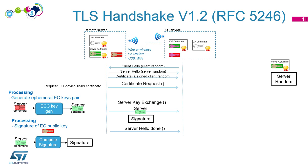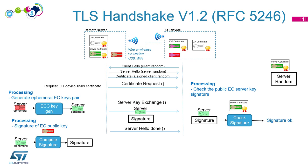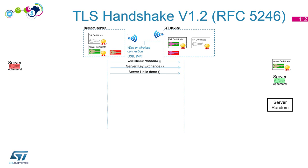The server sends this to the IoT device. The device checks the signature of the elliptic curve server key — using the server's public key already received and verified via the server certificate. The signature is OK, so the ephemeral elliptic curve public key is valid and stored for later use. At this point, the server has an ephemeral private EC key, and the IoT has the server certificate, the ephemeral server public key, and the server random.